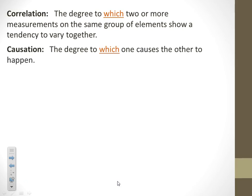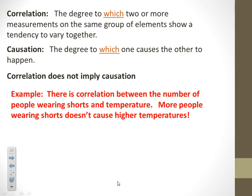An example is that there is a correlation between the number of people wearing shorts and the temperature outside. But just because a bunch of people are wearing shorts doesn't mean that the temperature is going to rise outside — it just means y'all can't wait to wear shorts.